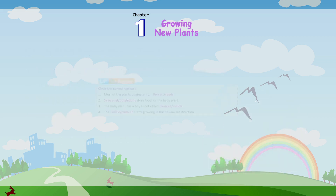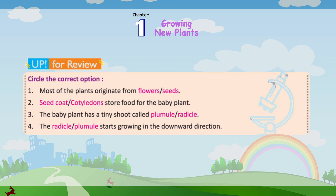Up for review. Circle the correct option. Most of the plants originate from seeds. The seed coat stores food for the baby plant — cotyledons do. The baby plant has a tiny shoot called plumule. The radicle starts growing in the downward direction.